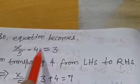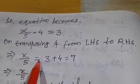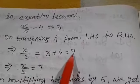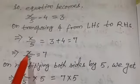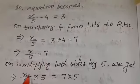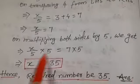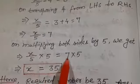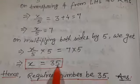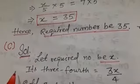Transposing −4 from LHS to RHS, it becomes positive 4 on the RHS. So x/5 = 3 + 4 = 7. Now multiplying both sides by 5 to separate the variable x: (x/5) × 5 = 7 × 5. The 5s cancel, giving x = 35. Hence the required number is 35.